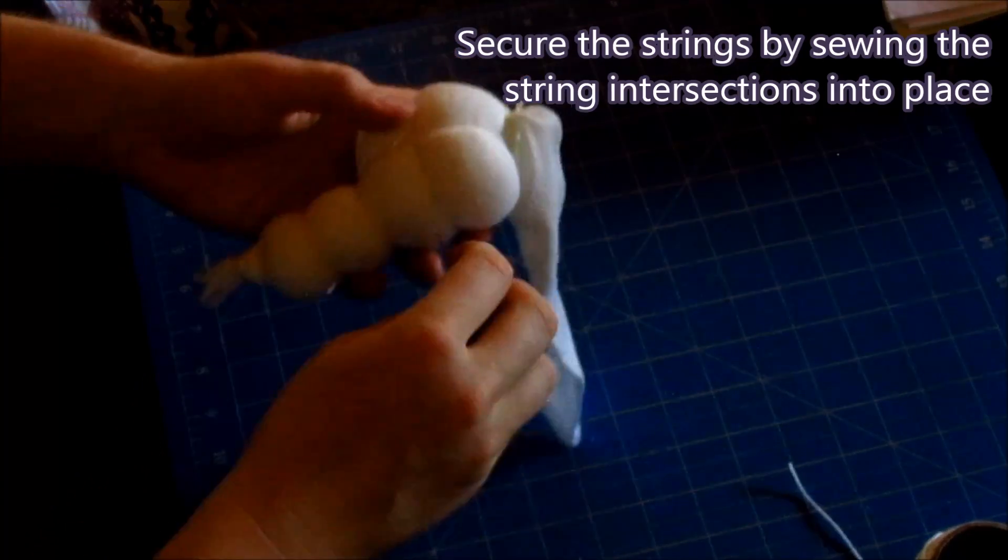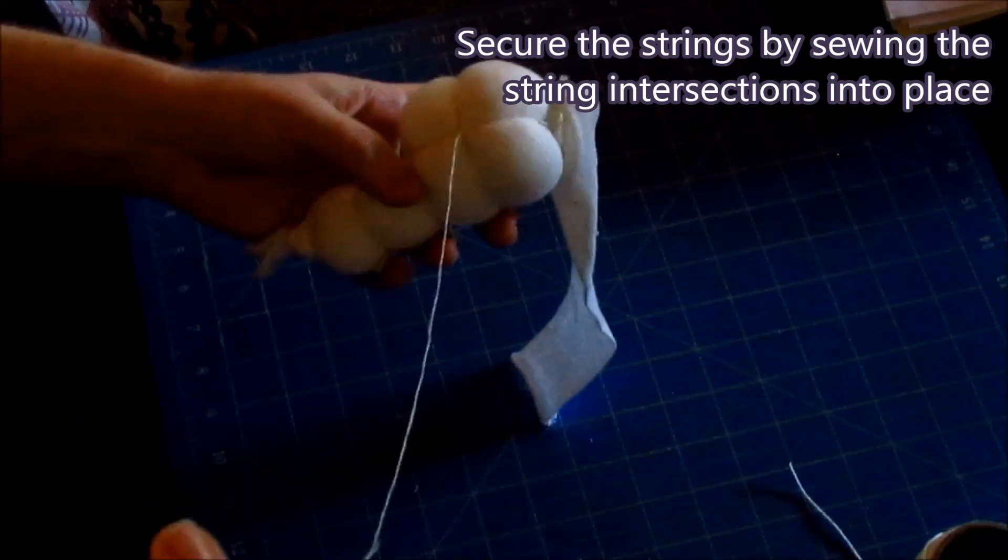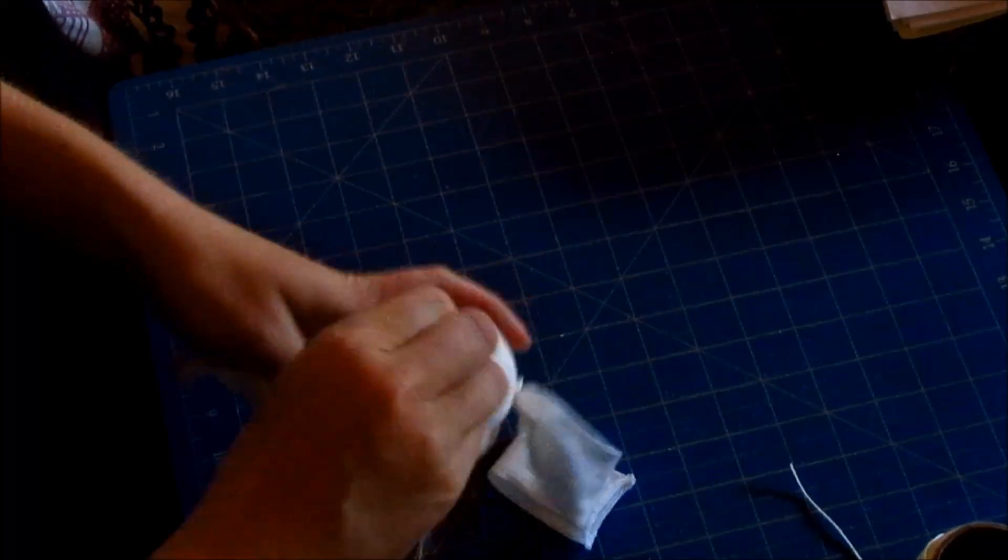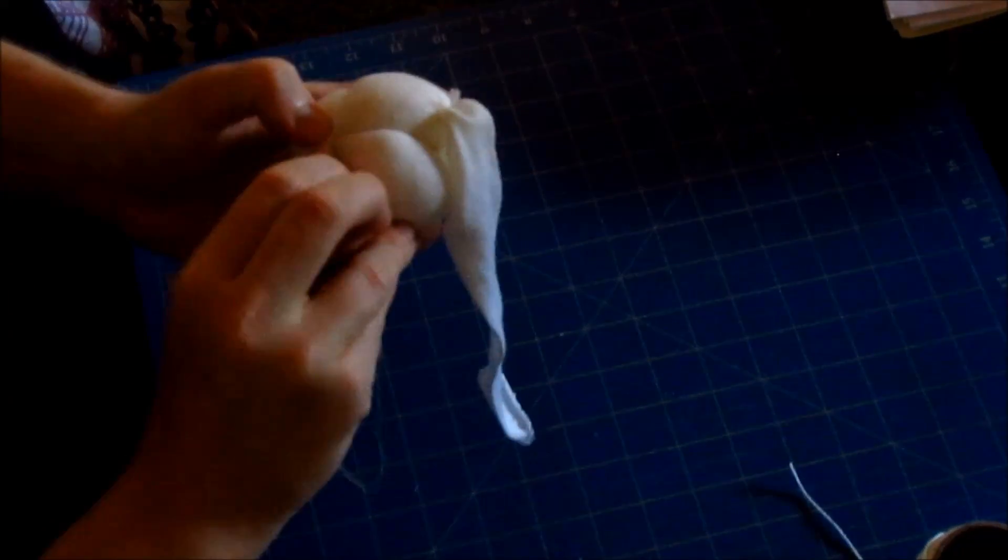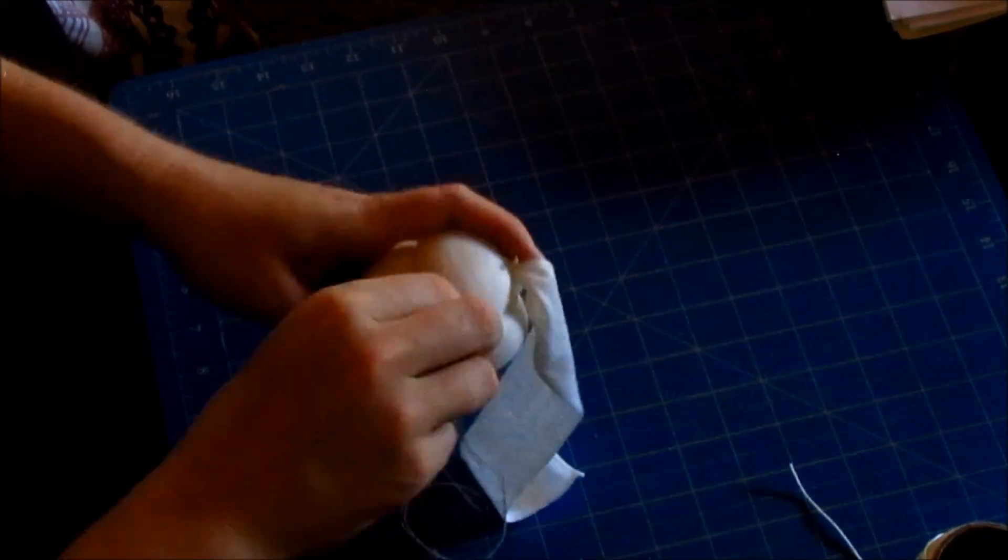Now we are going to secure the strings by sewing the string intersections into place. Just go crosswise over it several times and then work your way towards the middle of the face to make the nose.